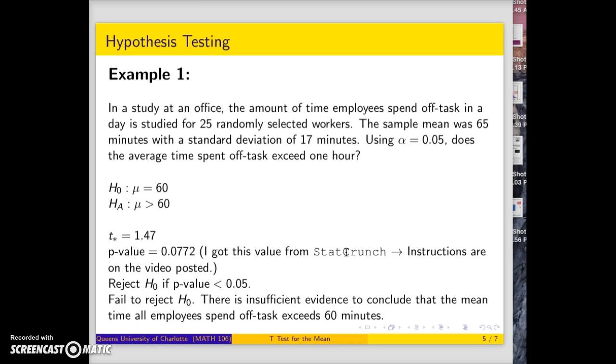Looking at an example here, a study in an office found that for 25 randomly selected workers, the sample mean time spent off-task is 65 minutes with a sample standard deviation of 17 minutes. Using an alpha level of 0.05, does the average time spent off-task exceed one hour?